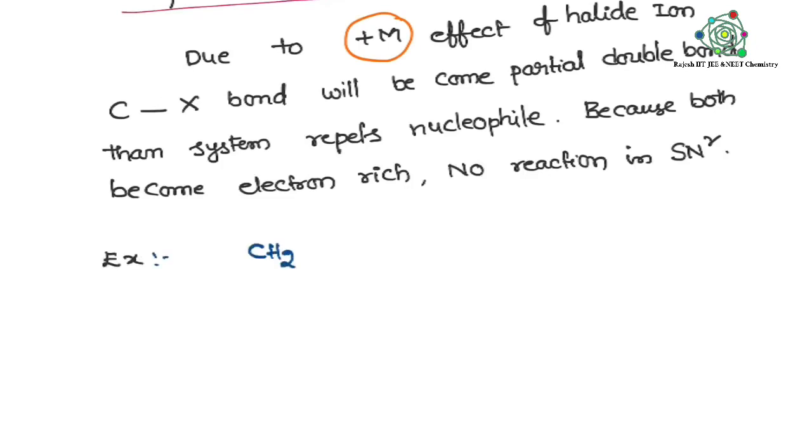So just I will give you one example for this. Example means I am taking vinyl chloride. I am taking vinyl chloride. So vinyl chloride if you take, due to plus M effect, the lone pair is coming towards this side and these pi electrons moving towards that side. Vinyl chloride I am taking.